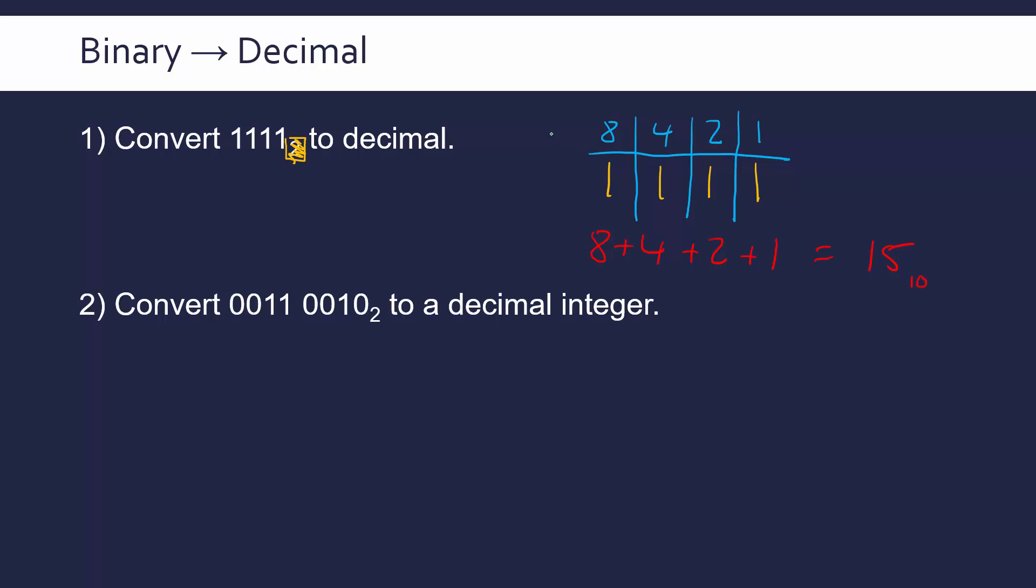Now just a couple of things to note here. I could have kept doubling, right? I could have gone 1, 2, 4, 8, 16, 32, 64 and so on until infinity. I stopped because I only had 4 bits to contend with and I've got 4 column headings.